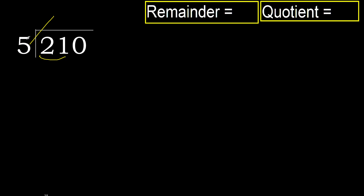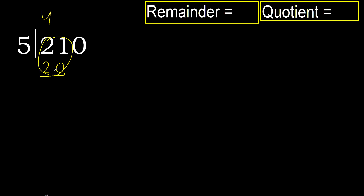5 multiplied by 5 is 25, which is greater. 5 multiplied by 4 is 20, which is not greater. OK, so subtract — remainder is 1.